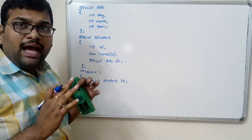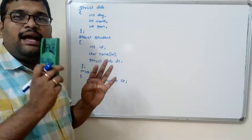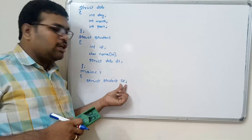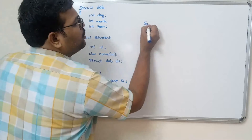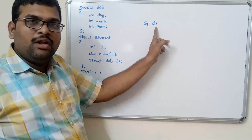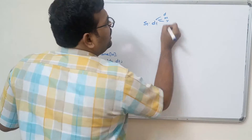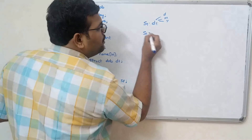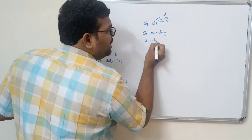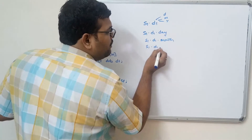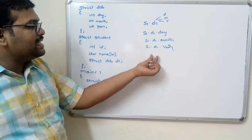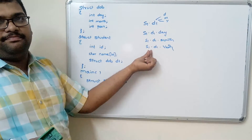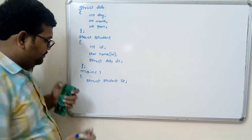A simple logic: to access the members of a structure we require the structure variable and the dot operator. So here we access the member d1 with `s1.d1`, and since d1 is a structure variable it further follows day, month, and year. To access those: `s1.d1.day`, `s1.d1.month`, `s1.d1.year`. This is how we access members of a structure variable declared as a member of another structure.